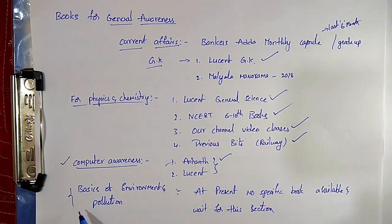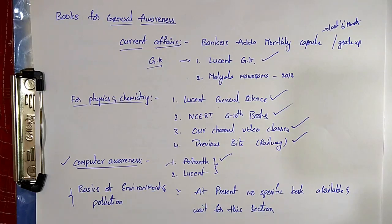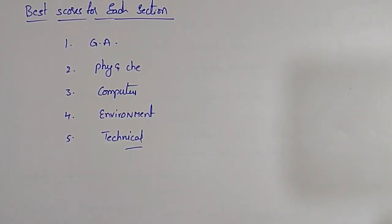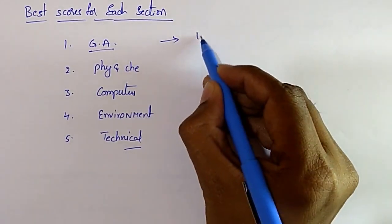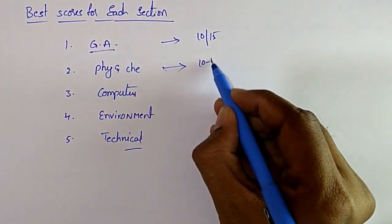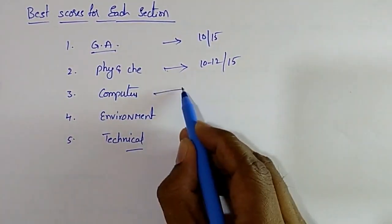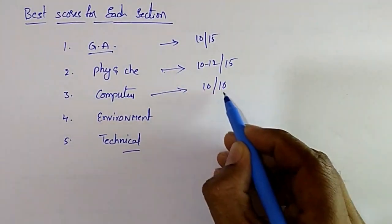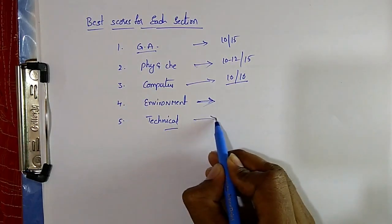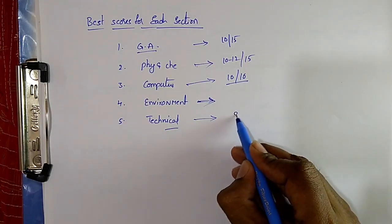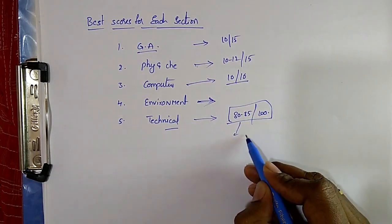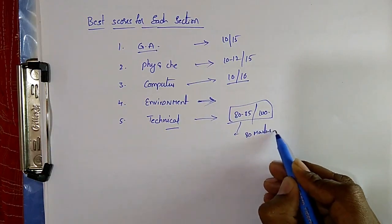For environment and pollution control, at present no specific book is available, so wait for this section. Finally, the best target scores for each section: general awareness — 10 out of 15; physics and chemistry — 10 to 12 out of 15; computer awareness — 10 out of 10; environment — no idea at present; technical abilities — 80 to 85 marks is the best score. Try to target 80 marks in the technical section.